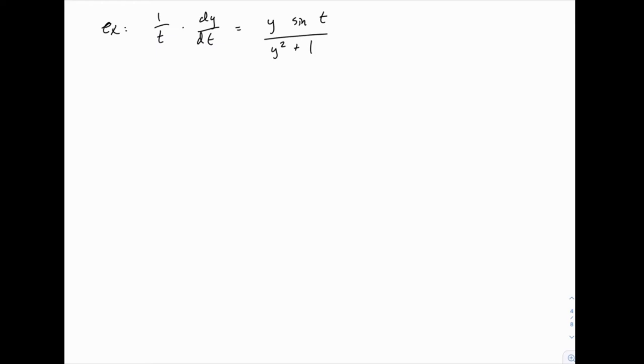Now before we begin, let's take a second and make sure we understand what this equation looks like and specifically look at this derivative here, dy over dt. What that tells us is that t is our independent variable and y is the dependent variable, y is a function of t.